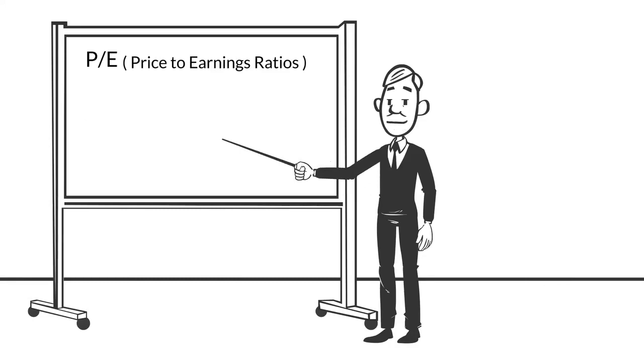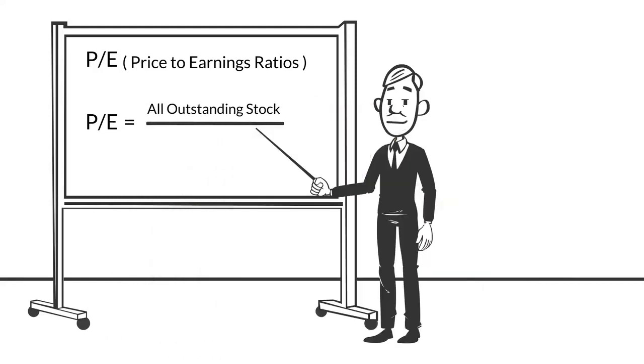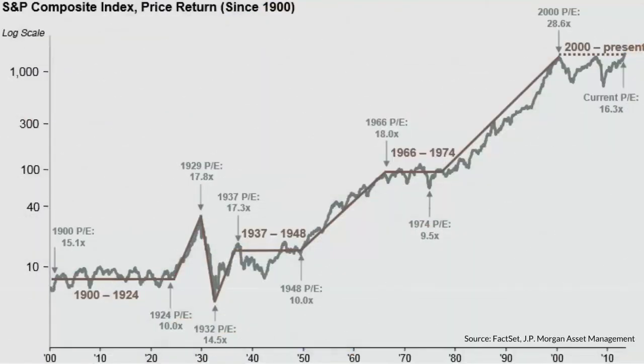There are also certain financial ratios known as price-to-earnings ratios or P&E ratios that can affect the market as well. Stock market history shows that we have never recovered from a long-term bear market cycle until P&E ratios fell into the single digits. That never happened during the two major drops we experienced between the years of 2000 and 2013.